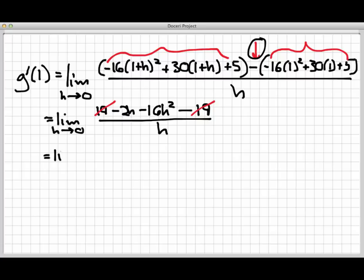Subtracting off the 19 gives me -2h - 16h² all over h. And I see that I have a common factor of h in both terms of the numerator.